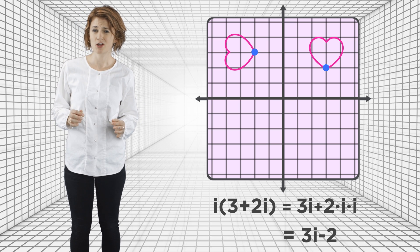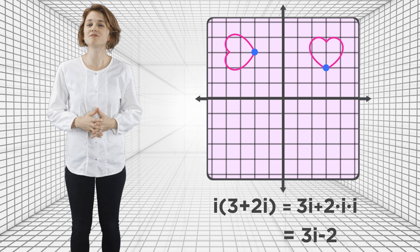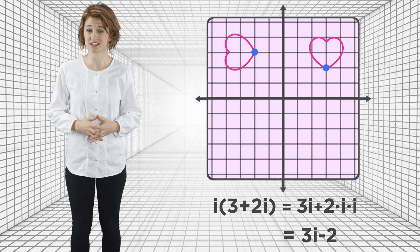Here's the kind of bummer part. The linkage that rotates your drawing by 90 degrees is really complicated. It involves combining dozens of other linkages.